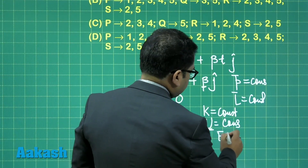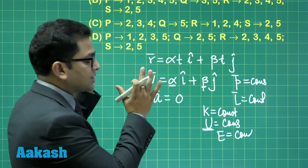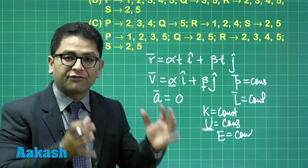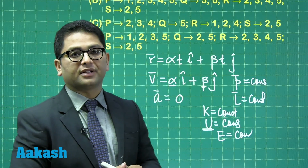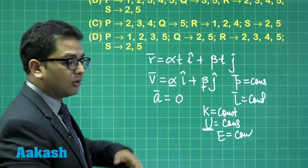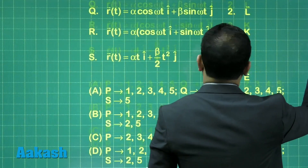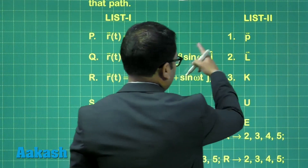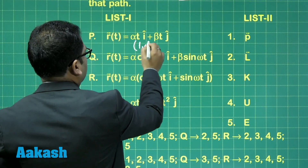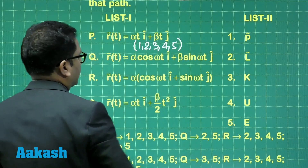Mechanical energy is conserved because in every situation given, the force if present is only conservative. So for option P, all five quantities — 1, 2, 3, 4, 5 — are conserved: linear momentum, angular momentum, kinetic energy, potential energy, and mechanical energy.